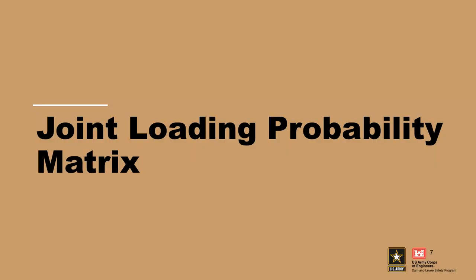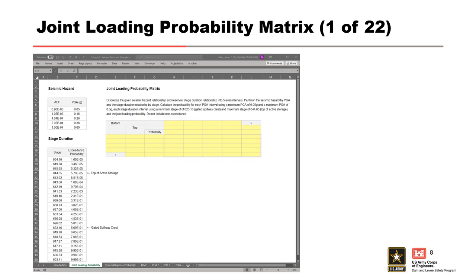The first step in the risk calculation process for seismic potential failure modes is to complete a joint loading probability matrix. When evaluating seismic potential failure modes, two conditions must be present: there must be a seismic event, and the structure must be hydraulically loaded. If a seismic event occurs but the water level is too low to result in uncontrolled release, then there aren't any consequences. If the water is high but there's no seismic event, then there won't be a failure. These conditions are accounted for by the seismic hazard curve and the stage duration curve.